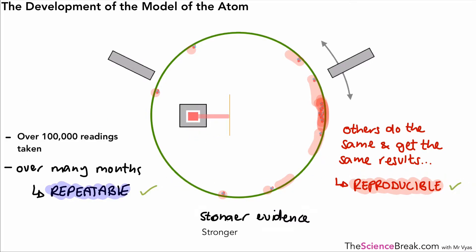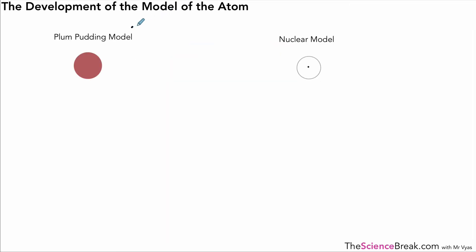The plum pudding model was replaced with something called the nuclear model. The reason why that happened was because we had new evidence from new experimental results which changed our ideas of what the model of the atom actually looked like.